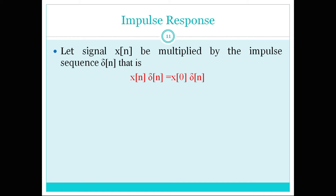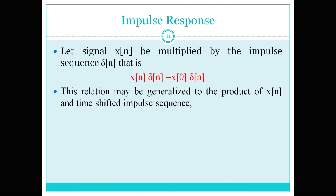So the result will be 0 everywhere except at n equal to 0, retaining only one value. Now we want to generalize this relation, since this holds only at n equal to 0. We want to retain x of n at various values of n. We can do that by multiplying with the impulse sequence shifted to that concerned location. For example, to retain the value at n equal to 1, we use x of n times delta of n minus k, which equals x of k times delta of n minus k.